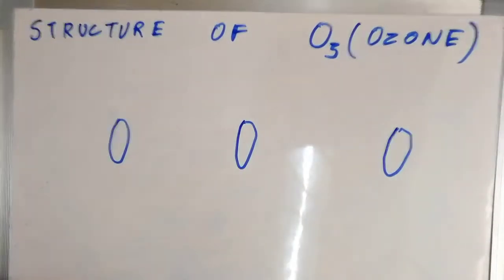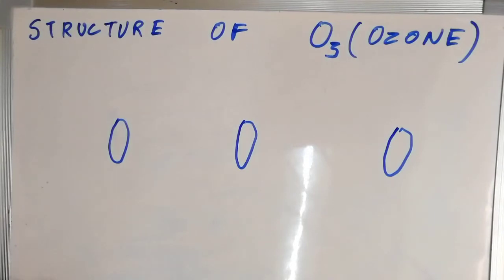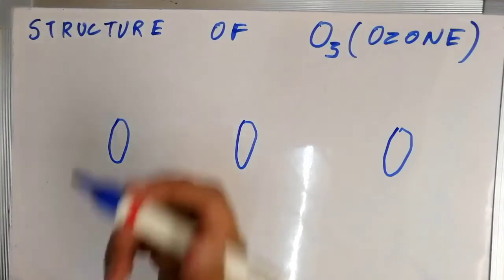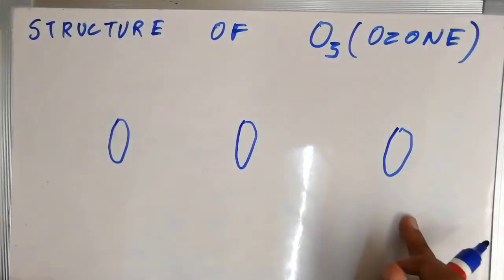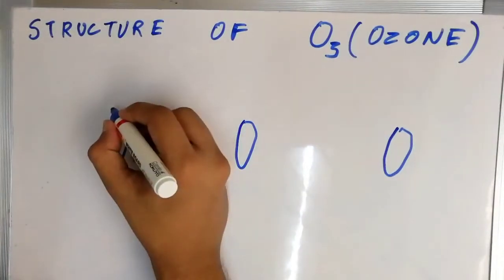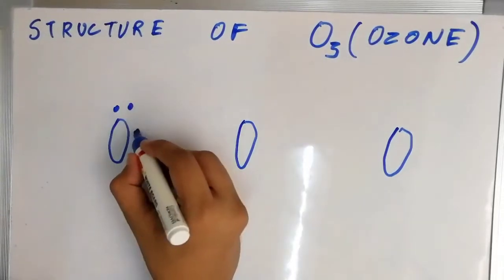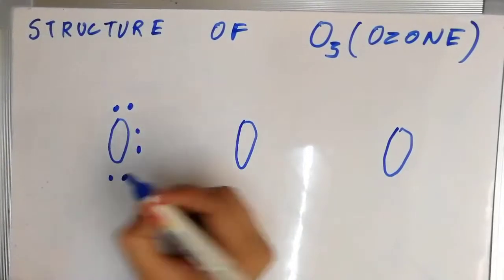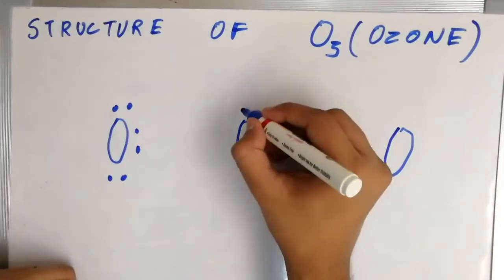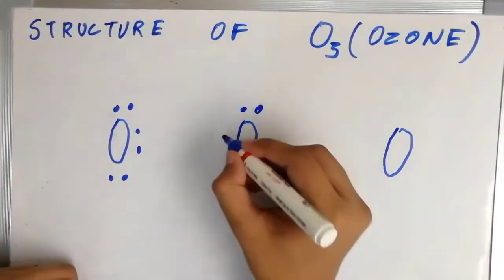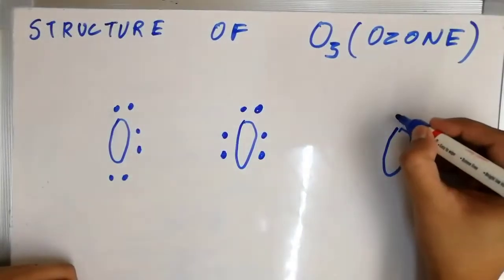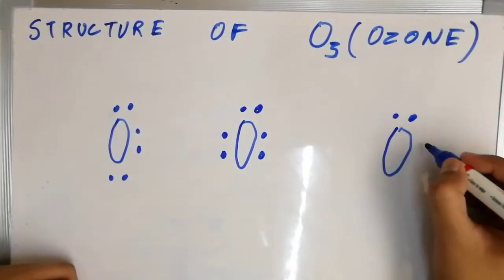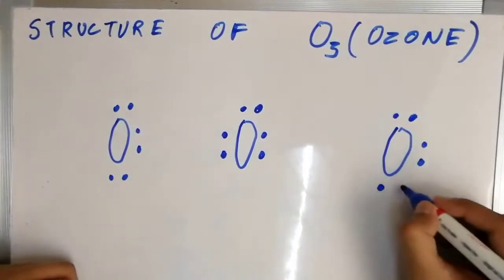So an oxygen atom has six valence electrons. We're going to draw the six valence electrons of each oxygen atoms. One two three four five six and for this one also one two three four five six and same for this one two three four five and six.